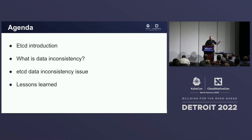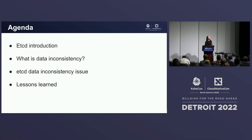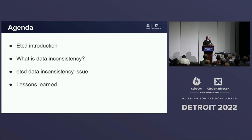Today's agenda: I will introduce you to etcd, at least enough to understand what happened. I will go briefly about data inconsistency — how it can occur and how etcd protects against that. Then Benjamin will tell you about how it really happened in the case of etcd. At the end I will give you lessons learned and what actions we will take as etcd maintainers to fix those, along with some personal learnings.